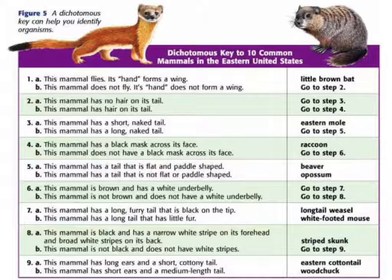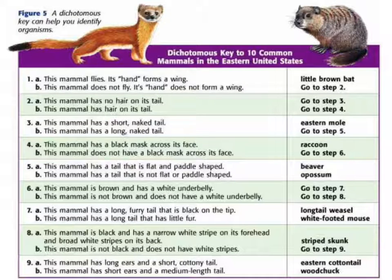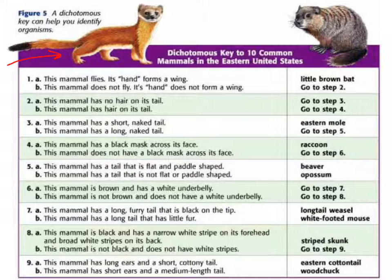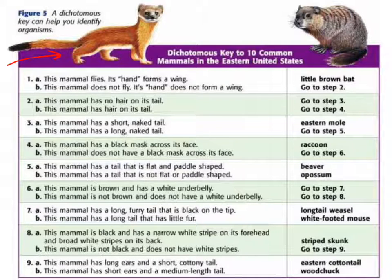Here we have an example of a simple dichotomous key for some mammals. We have two pictures of two different mammals at the top — one on the left and one on the right. We'll take a look at the animal on the upper left and go through this series of questions to get an idea of how to use a dichotomous key, which we'll also practice in class several times.